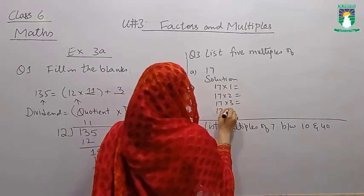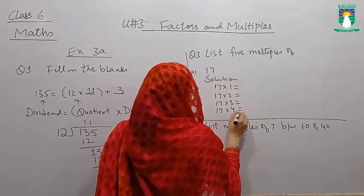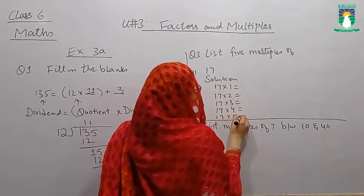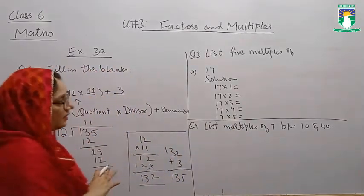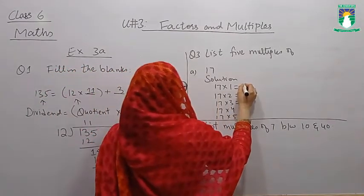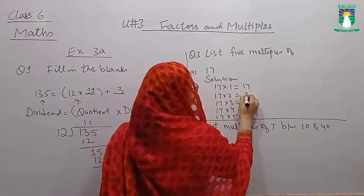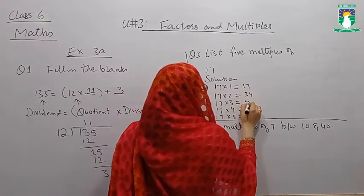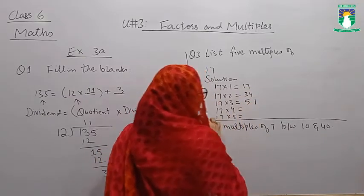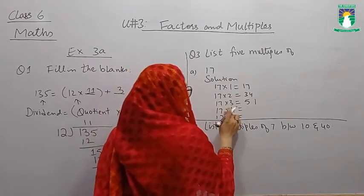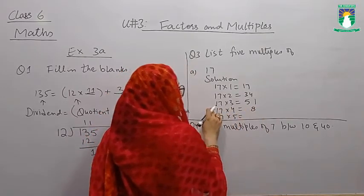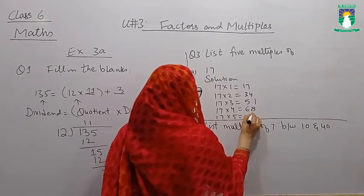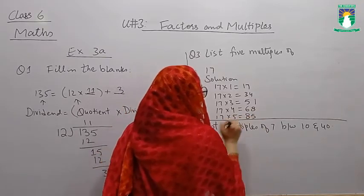I will write the table for 17. 17 times 1 is 17, 17 times 2 is 34, 17 times 3 is 51, 17 times 4 is 68, 17 times 5 is 85.